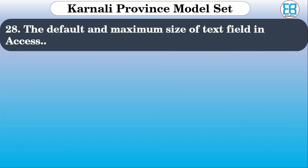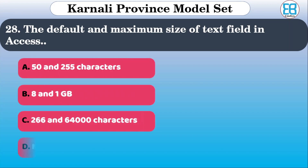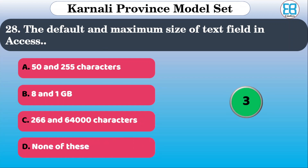What are the default and maximum sizes of a text field in MS Access? The options are: 50 and 255 characters, 8 and 1 GB, 60 and 266, 64,000 characters, none of these. The correct option is 50 and 255 characters.